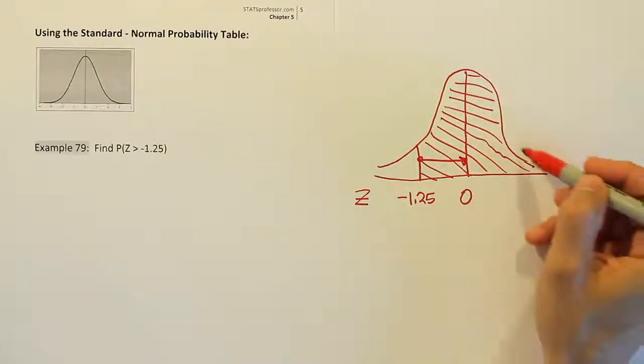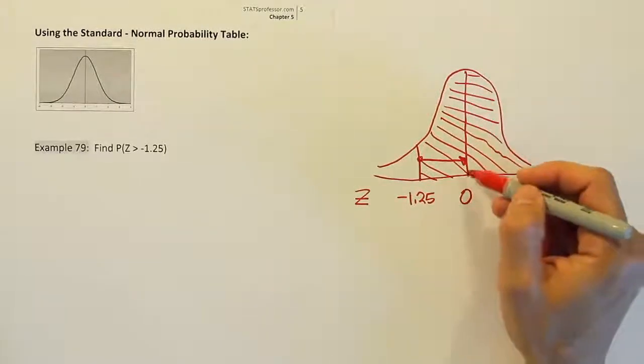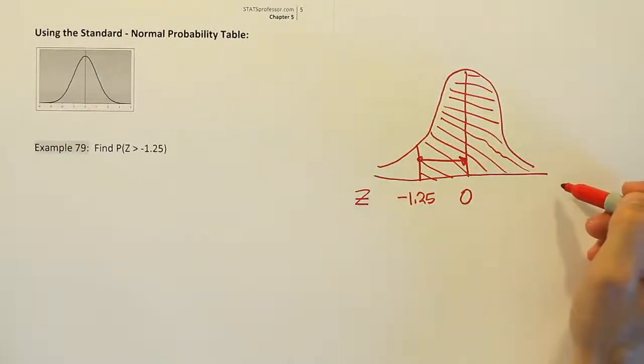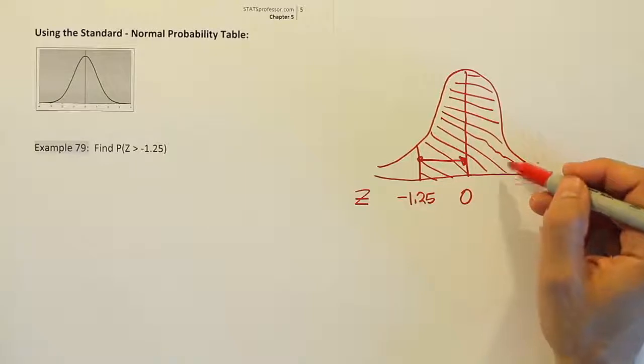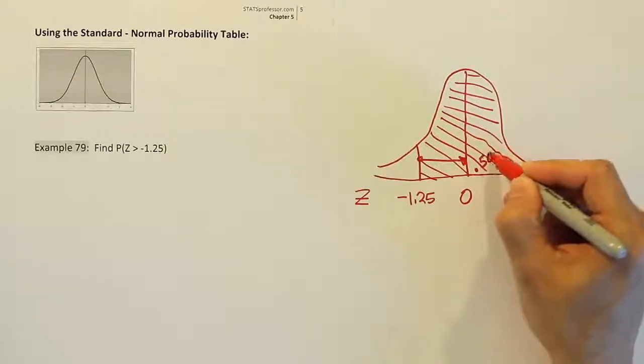So how are we going to figure out this area? Well actually that's pretty simple because logically if this area is half of the curve that's shaded, it should be worth half of the total area. Well the total area is 1 so half of that is of course 0.5. So we know the area in here must be 0.5000.